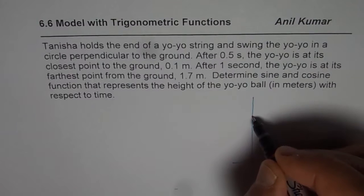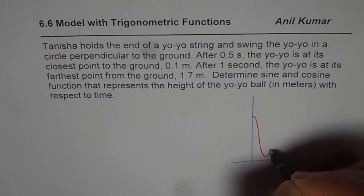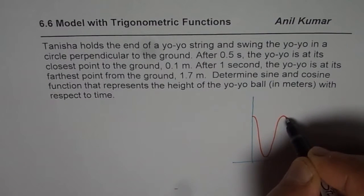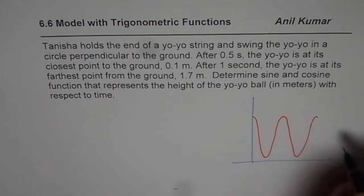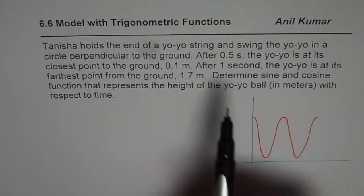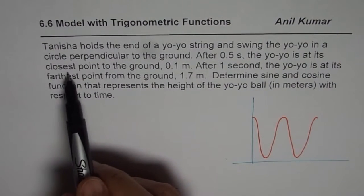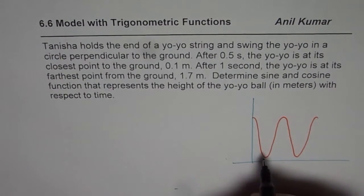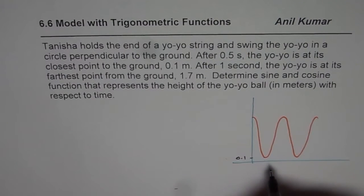So we can show that in the form of a sine wave kind of like this. Let us say that is the kind of path followed by it. Now the question is, after 0.5 seconds, the yo-yo is at its closest point to the ground. And that too is 0.1 meters from the ground and the time is 0.5.